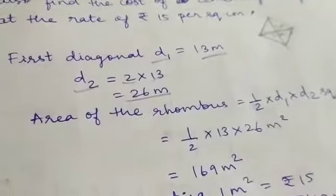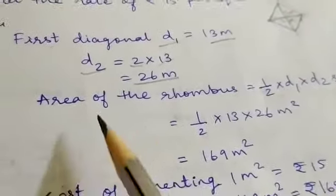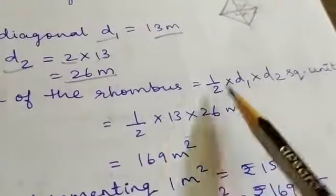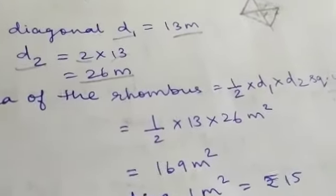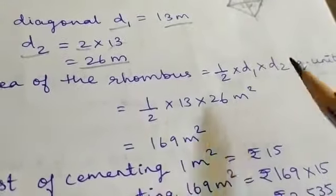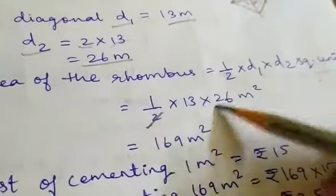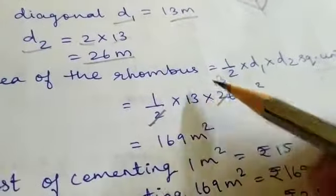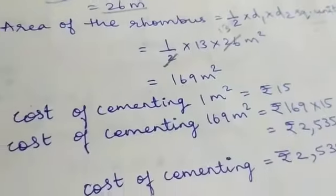Area of the rhombus equals half into d1 into d2 square units. So half into 13 into 26. When 2 and 26 are cancelled, it's 13 into 13, which equals 169 meter square.